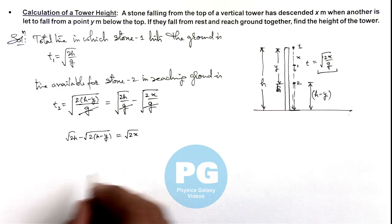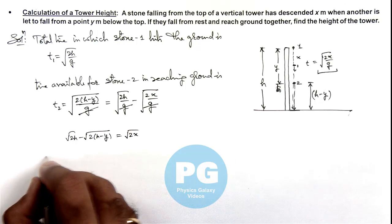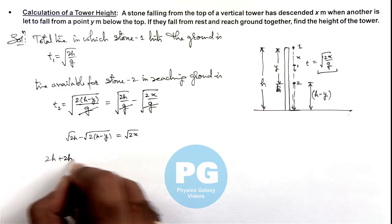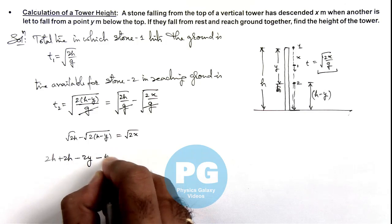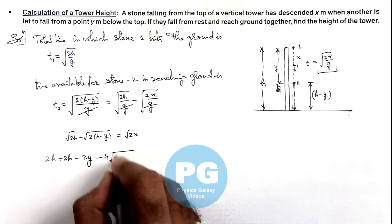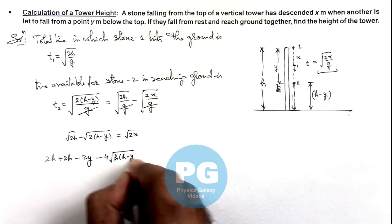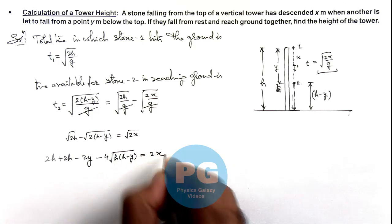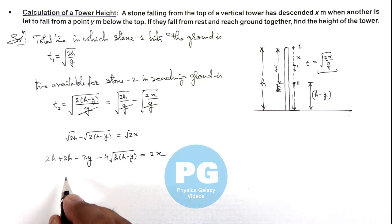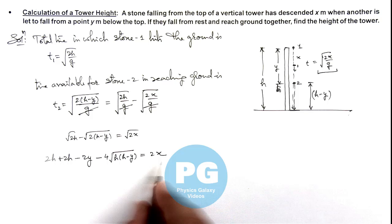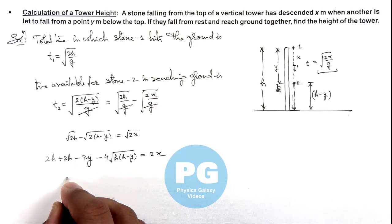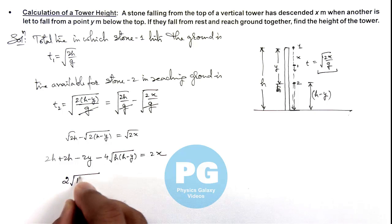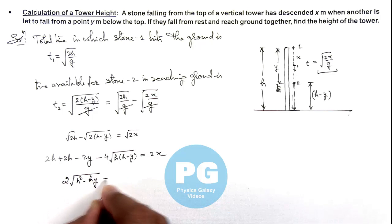If we square this relation, this will give us 2h plus 2h minus 2y minus 4 times root of h multiplied by h minus y is equal to 2x. And in this situation, if we further square this term here you can see, on left hand side we can write 2 times root of h square minus hy which is equal to.